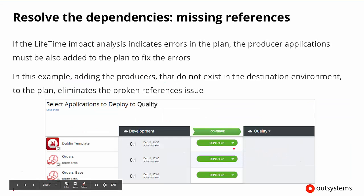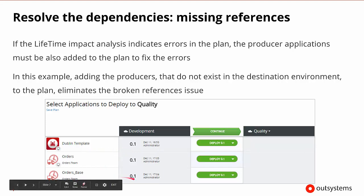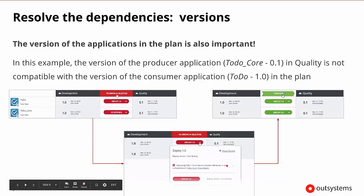To be able to solve this, all we have to do is look for the versions of those applications. It mentioned the Dublin template, so we grab that. It mentioned order base, so we need that as well. We need to change them from do nothing to actually deploying version 0.1. This way, all three of them will be deployed together, giving orders all of its dependencies and fixing all of the errors it might have. That's how we resolve dependencies when we're missing different types of references.